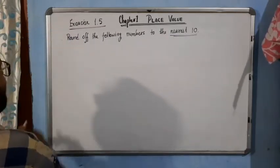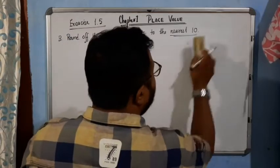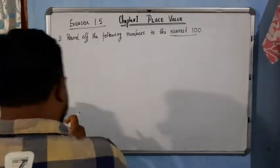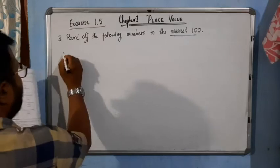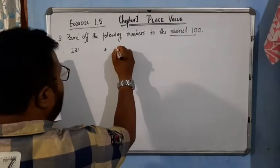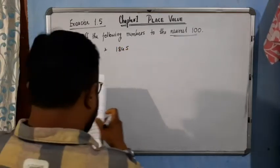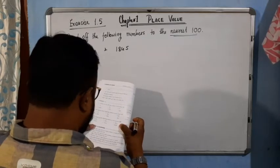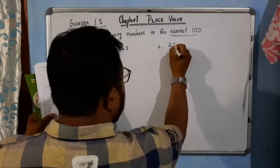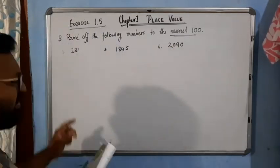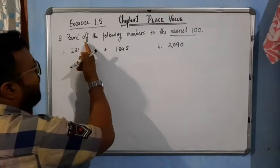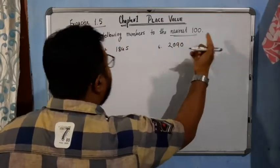In your book, it is part B and it is nearest hundred. Let's take a few examples from your book. We'll take: number 1 is 231, number 3 is 1845, and number 6 is 2090. Only three examples — the rest you can do by yourself. Now, round off the following numbers to the nearest hundred.